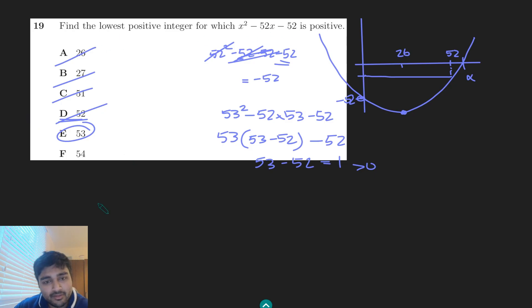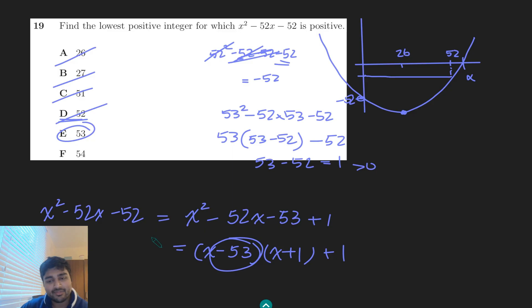And that's by taking this quadratic x squared minus 52x minus 52 and basically working out the value of alpha, or at least approximating it by essentially saying this is x squared minus 52x minus 50. I want to do 53 and then plus 1. So this is going to be (x minus 53)(x plus 1) and then plus 1 like so. So we know that this quadratic here is going to have roots near 53 and minus 1.